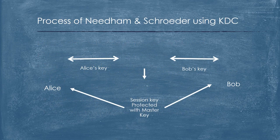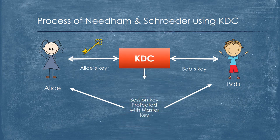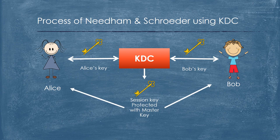The Process of Needham and Schroeder Using KDC. This is a simple understanding of how a connection is done with KDC. First, Alice wants to send a message to Bob. To do that, Alice must send her secret key to the KDC to generate a Session Key for Alice. The KDC will also do the same for Bob's secret key by generating a Session Key for him. Once both Alice and Bob have their Session Keys verified, they can start their communication.